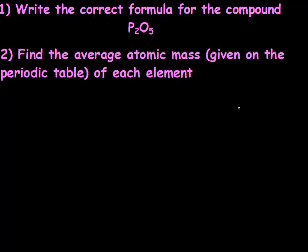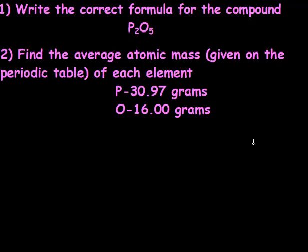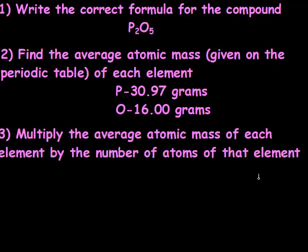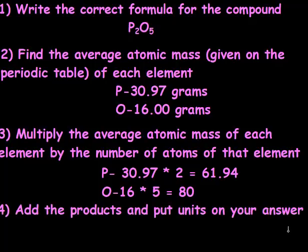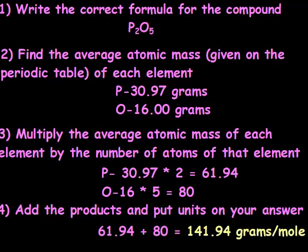Next, we're going to find the average atomic mass, which is on the periodic table for each element. So P is 30.97 grams, and oxygen is right at 16. We're going to multiply those average atomic masses by however many atoms we have in that element. So I had two P's and five oxygens. So my mass of P times two and my mass of oxygen times five. Finally, I'm going to add those numbers up and put units on my answer. So 61.94 and 80 gives me a final answer of 141.94 grams per mole.